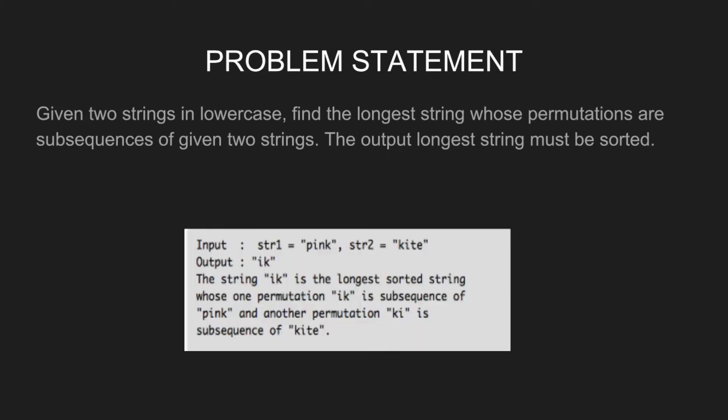For input string 1 equal to pink, string 2 equal to kite, output will be ik. The string ik is the longest sorted string whose one permutation ik is a subsequence of pink and another permutation ki is a subsequence of kite.